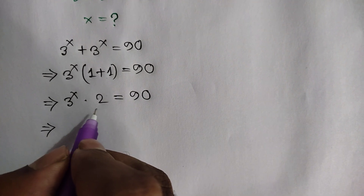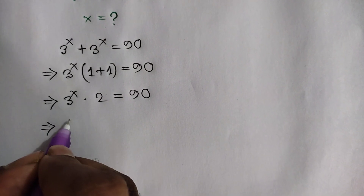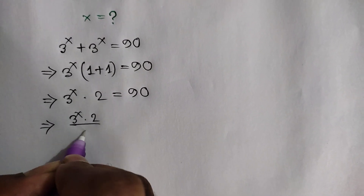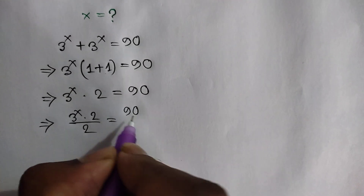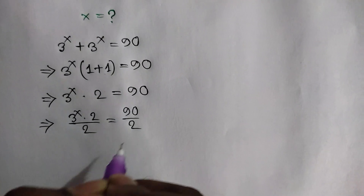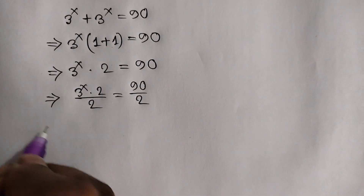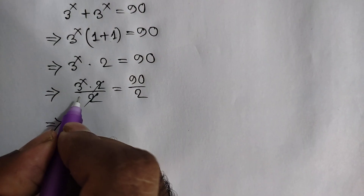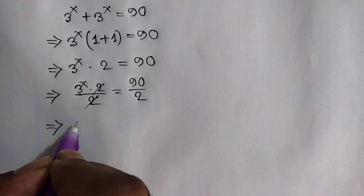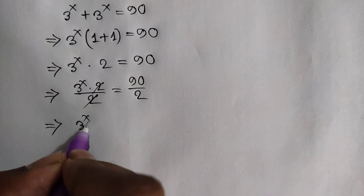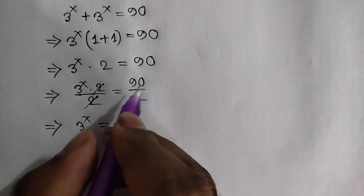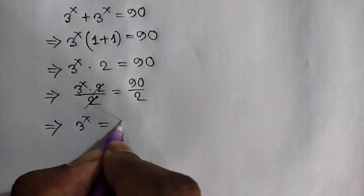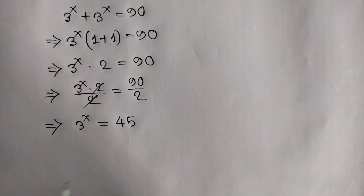Dividing both sides by 2, we can write 3 to the power x times 2 over 2 is equal to 90 over 2. These 2s cancel out, so it will be remaining 3 to the power x is equal to 90 divided by 2, which is equal to 45.